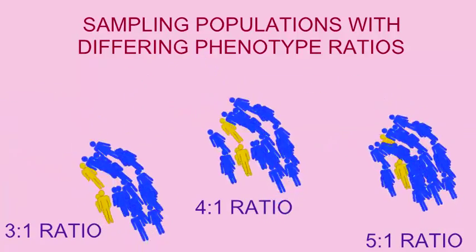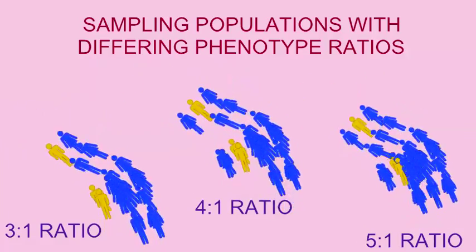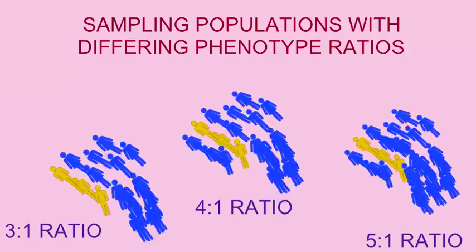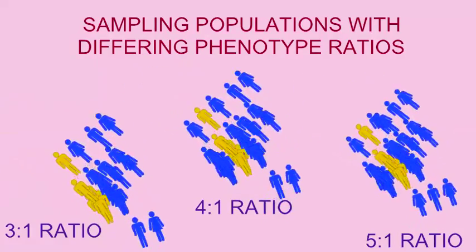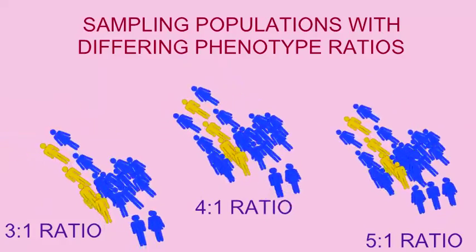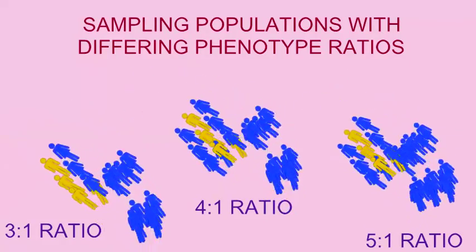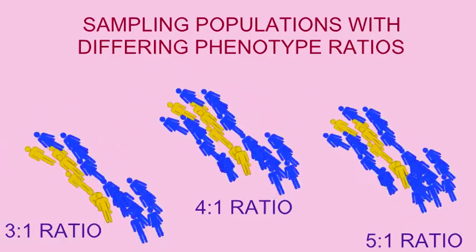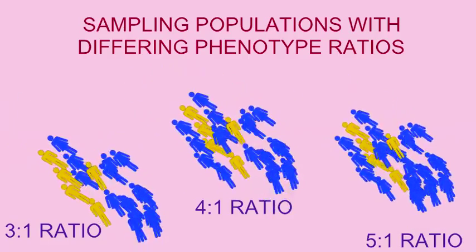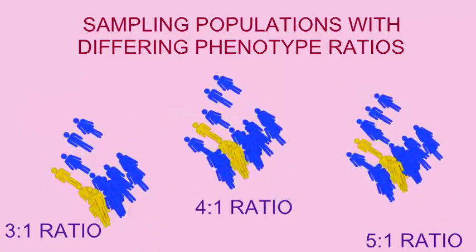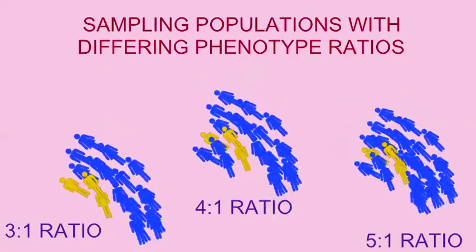This is why the chi-square statistical test is used, so that one can speak in confidence as to whether something can reasonably be considered to be a 3 to 1 ratio, or whether a different type of ratio is actually being represented.